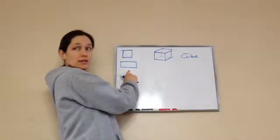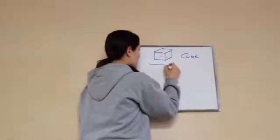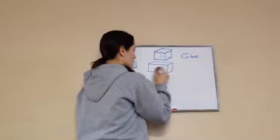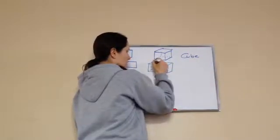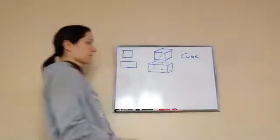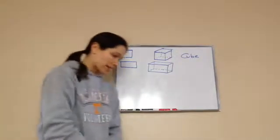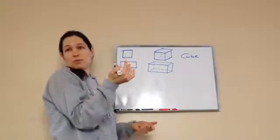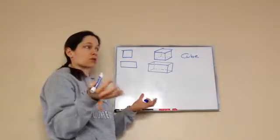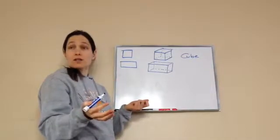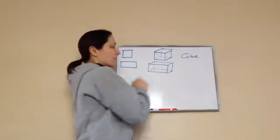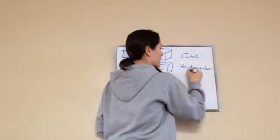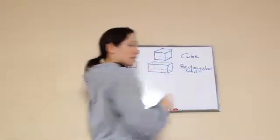This is a rectangle. But as a geometric solid, that is a rectangular solid. An example of this would be like a box you get in the mail or a cereal box. You might want to write these down if you don't know the names already: rectangular solid.